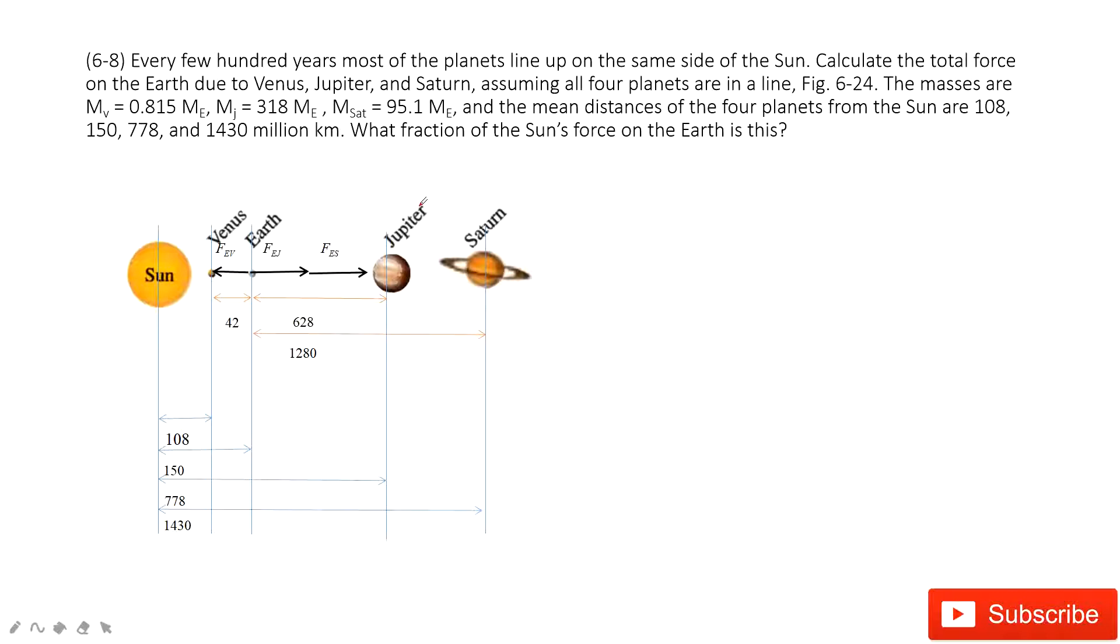It's G times M₁ times M₂ divided by r squared, right. This is very neat in this chapter.